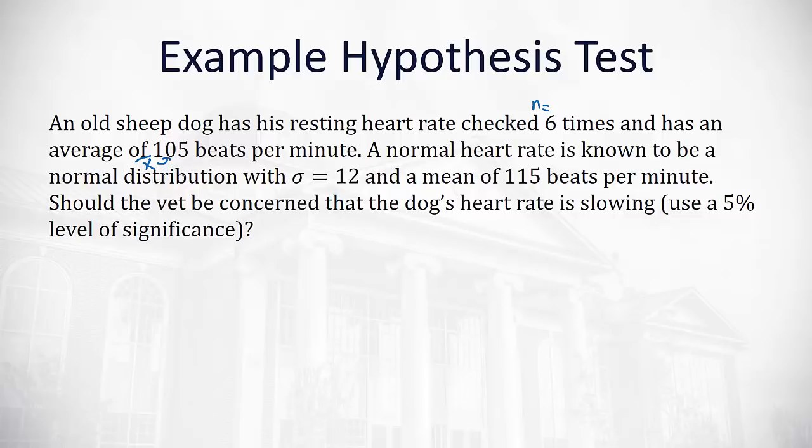A normal heart rate for the old sheepdog is a normal distribution with σ equal to 12, and we have a mean of 115 beats per minute. Notice that mean is going to be μ because that's talking about the average of all sheepdogs. Normally, they have 115 beats per minute. The vet wants to know, should the vet be concerned that the dog's heart rate is slowing? And it says to use a five percent level of significance. That means our alpha is 0.05. The smallest probability where we'll believe the null hypothesis is five percent. Any smaller than five, we'll reject it.